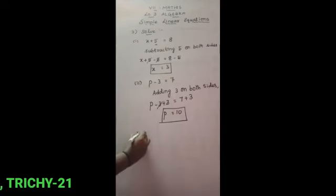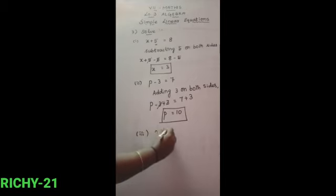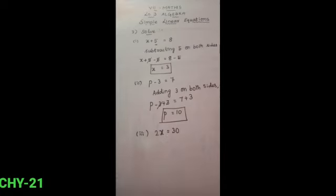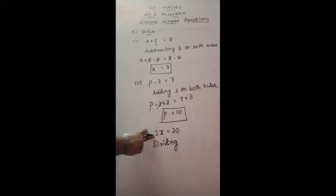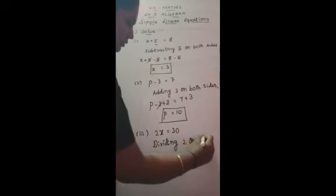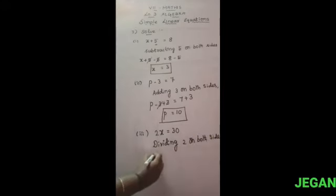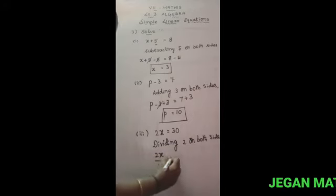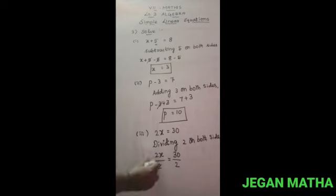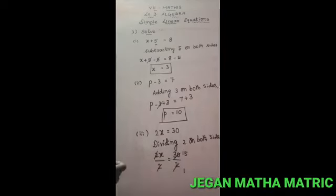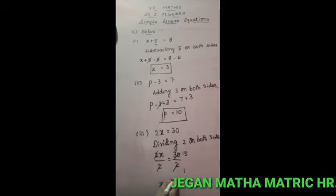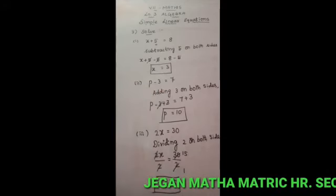In the third one, given 2x is equal to 30. Here multiplication is given, so we apply division. Dividing by 2 on both sides: 2x divided by 2 equals 30 divided by 2. The 2s cancel, and 30 divided by 2 is 15. So the value of x is equal to 15. This is the answer for the third one.